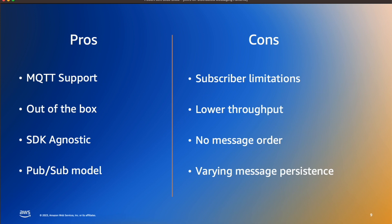That was our demo on MQTT5 shared subscriptions. For pros and cons of using this as a distributed messaging pattern: the pros include out-of-the-box MQTT support with IoT Core — if your clients are already using MQTT, you don't have to change anything on the client side. It's SDK agnostic, meaning you can use PAHO, Mosquitto, or any open-source MQTT client to connect to IoT Core. Everything works off a pub/sub model, enabling a real-time notification system.